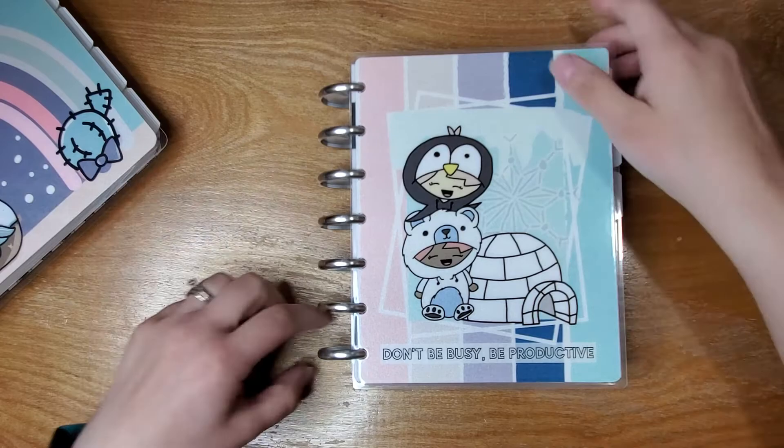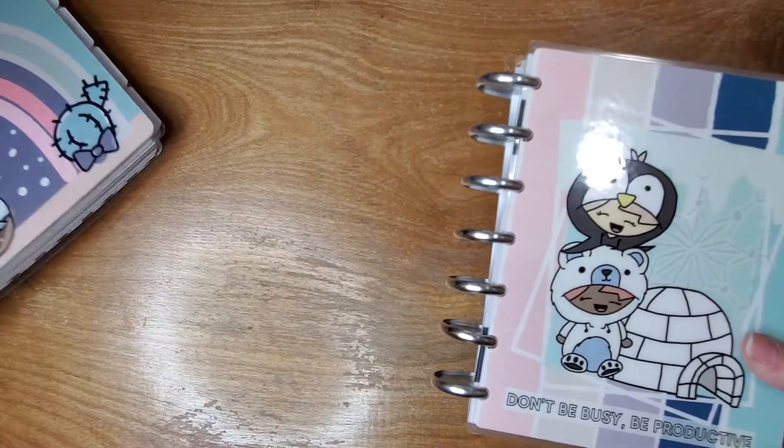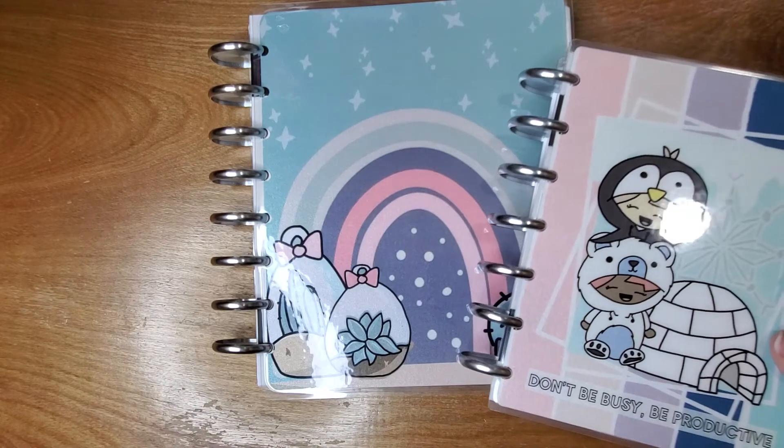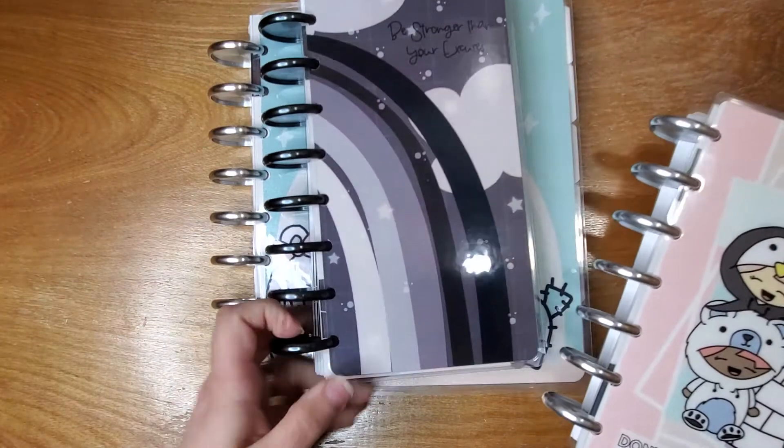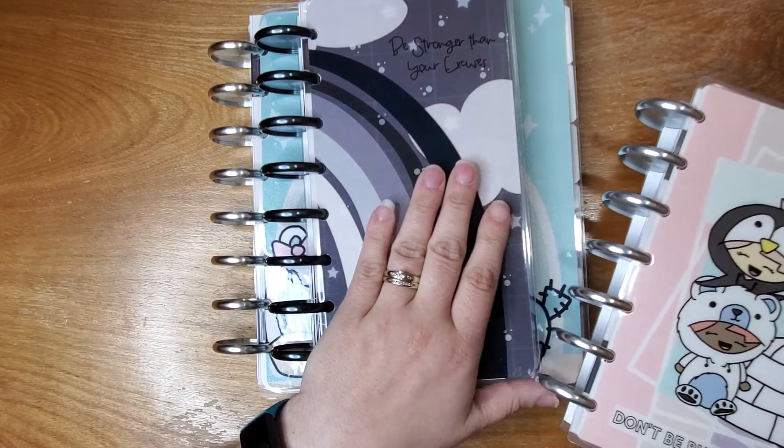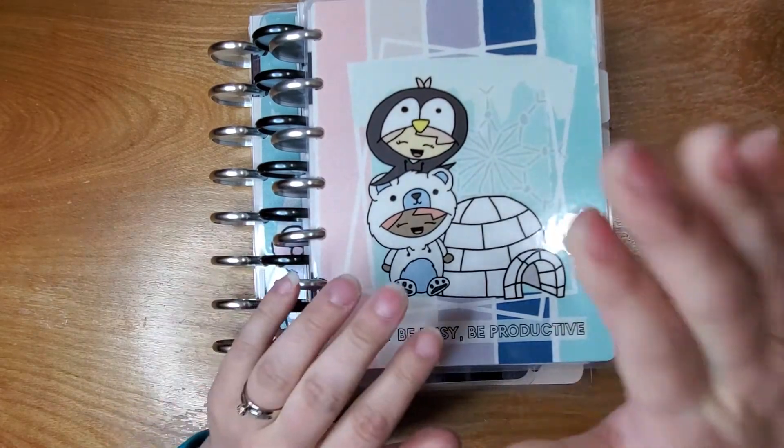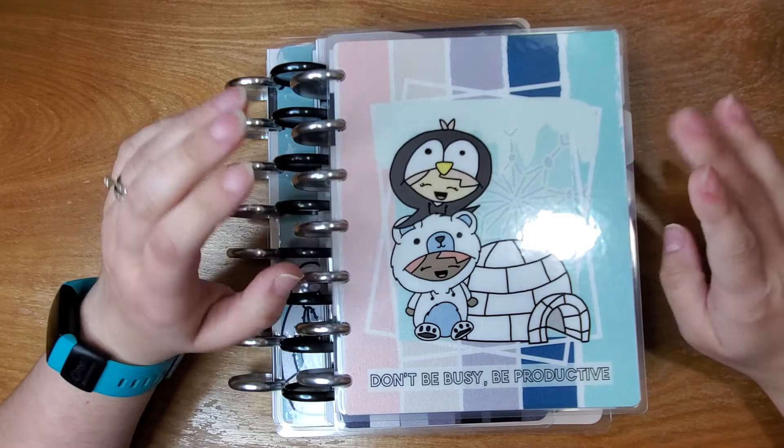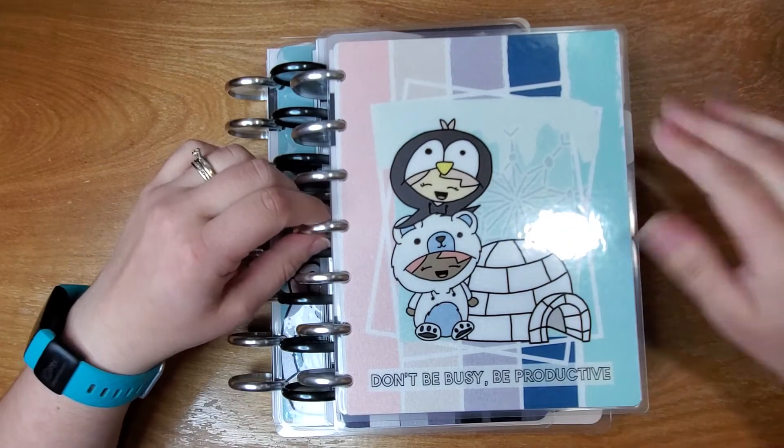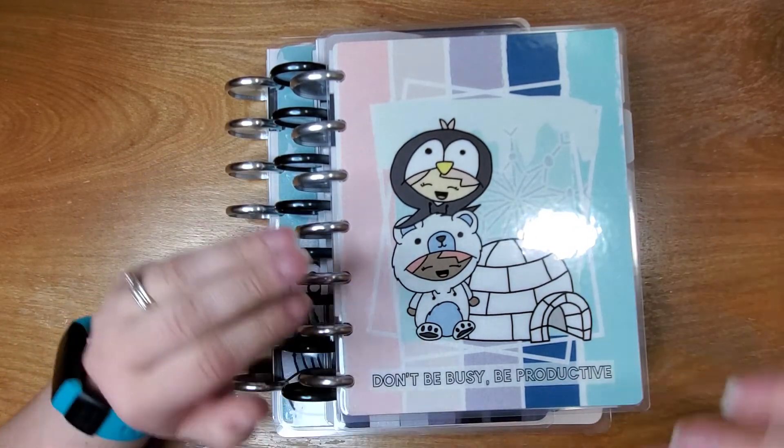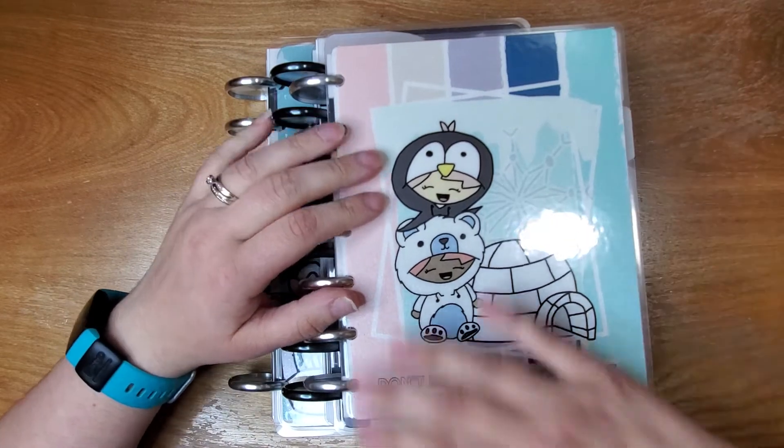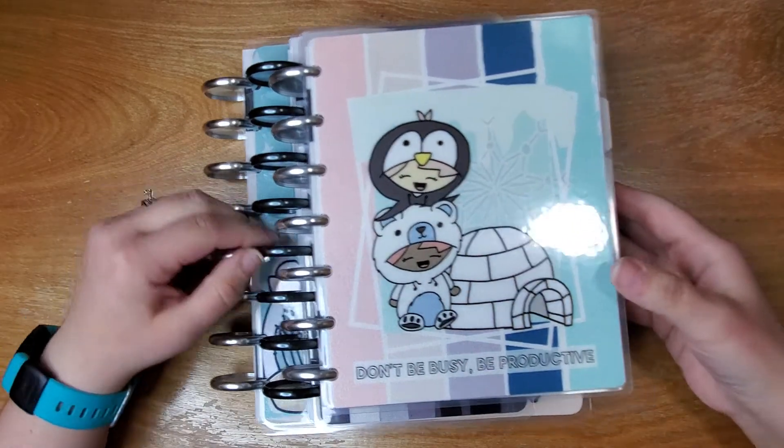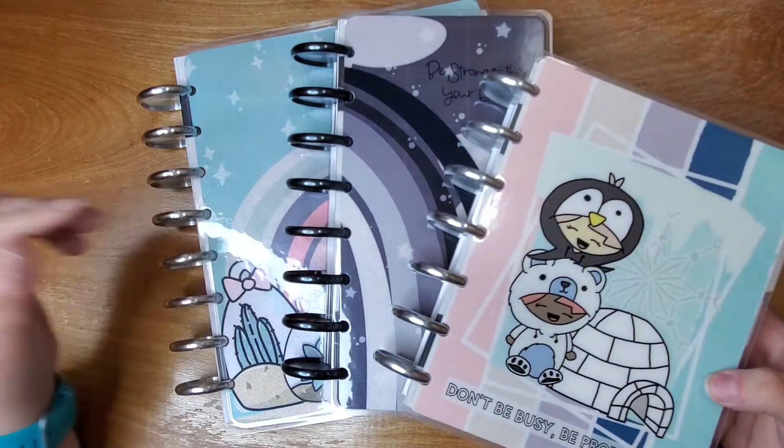So that is what we have. We have our A5 wide for memory keeping, we have our PNG for health and wellness, and then we have our hybrid for everything else, social media, home, personal, shop and TPC admin kind of things. So all the things. So that is my 2022 planner lineup.